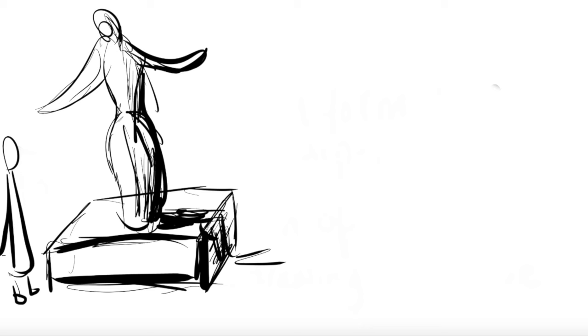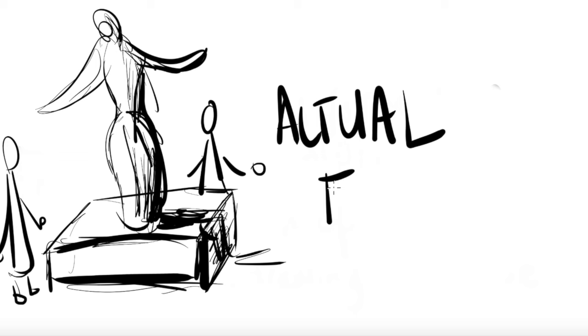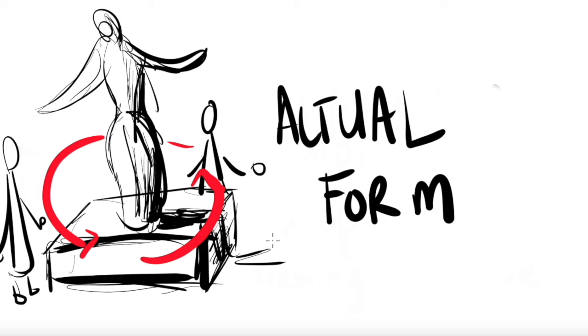This is an example of an actual form. It's a sculpture. Viewers can walk around it. And when we can walk around an actual form, we call this an in-the-round sculpture.